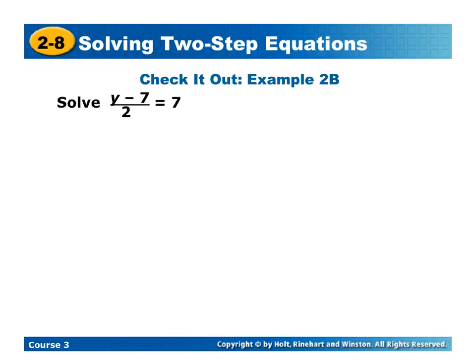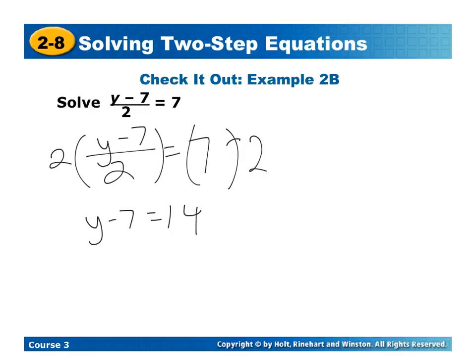Once again, your turn to solve this problem on your own. So here, we're going to start by multiplying by the denominator. So I'm going to multiply both sides by 2. I'm left with y minus 7 is equal to 14. I'm just going to go ahead and add 7. So y is equal to 21.